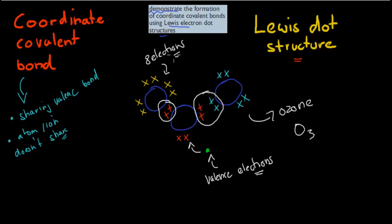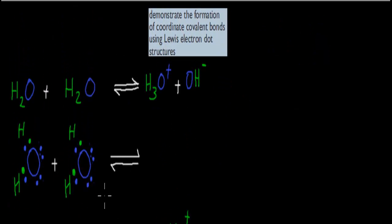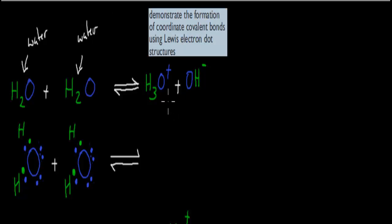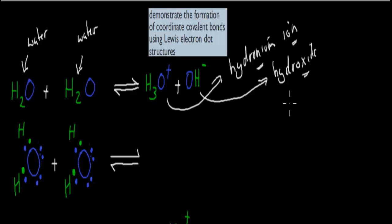The reason why I mention all this is because the dot point itself says to demonstrate the formation of coordinate covalent bonds using Lewis electron dot structures. So we've got two examples. First, we've got water reacting with water — two water molecules reacting together. They form the hydronium ion. The hydronium ion will actually decrease the pH — it's acidic — whereas the hydroxyl ion, which also comes out of this reaction, will increase the pH and make it more basic.